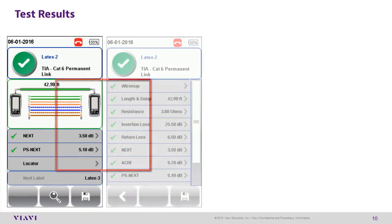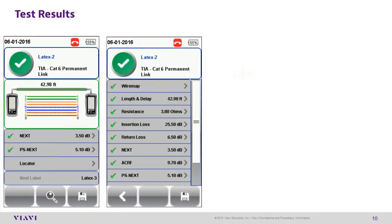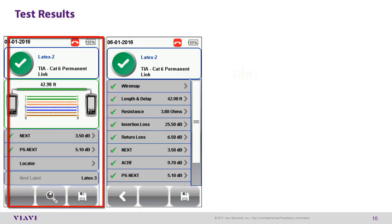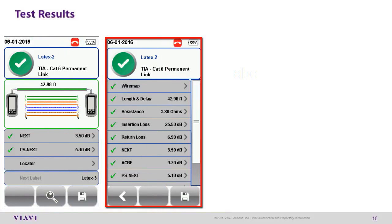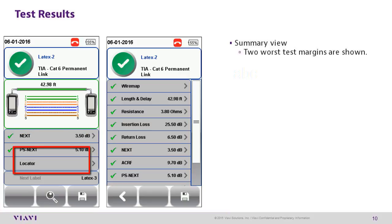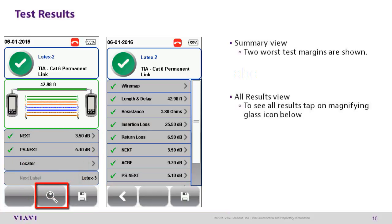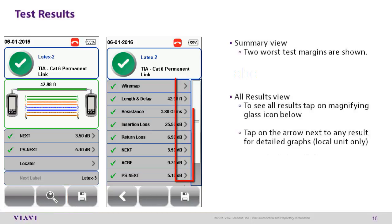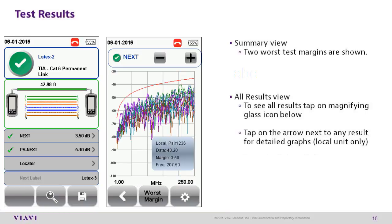Test Results. There are two primary ways to view test results: Summary View and All Results View. Summary View will list the two worst test margins. All Results View allows you to view detailed graphs, but this can only be done on the local unit. From the detailed screen on the local unit, tap any result to see further details including graphs and tables.